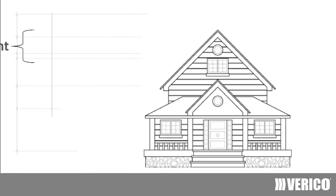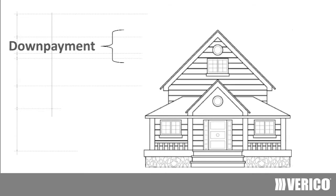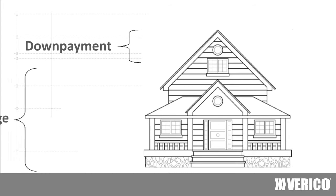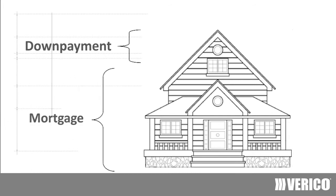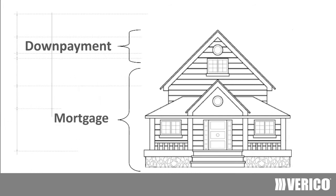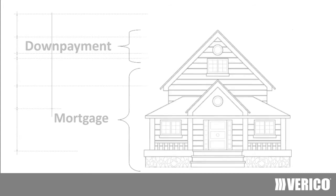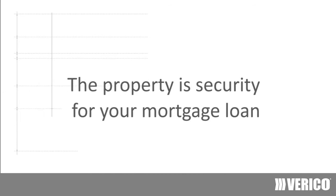Your down payment only pays a portion of the home's purchase price. The outstanding balance is financed in the form of a mortgage from a bank or a lender. A mortgage is simply a personal loan used to purchase a property. You pledge the property as security for the loan.